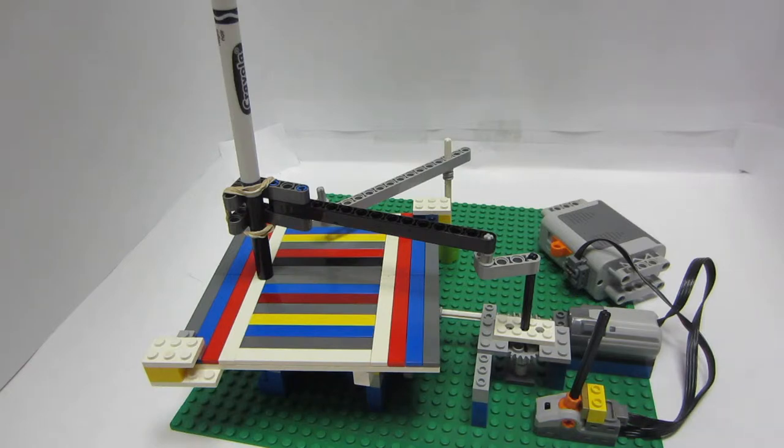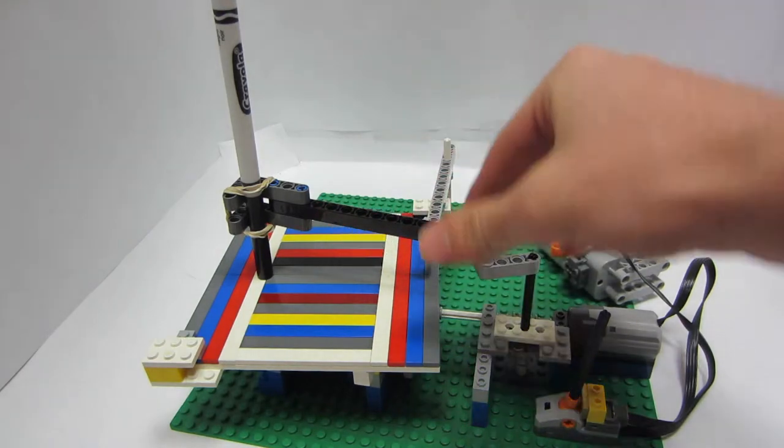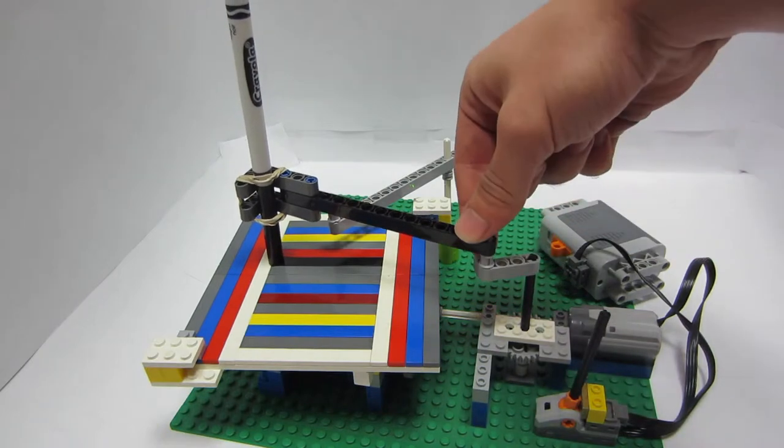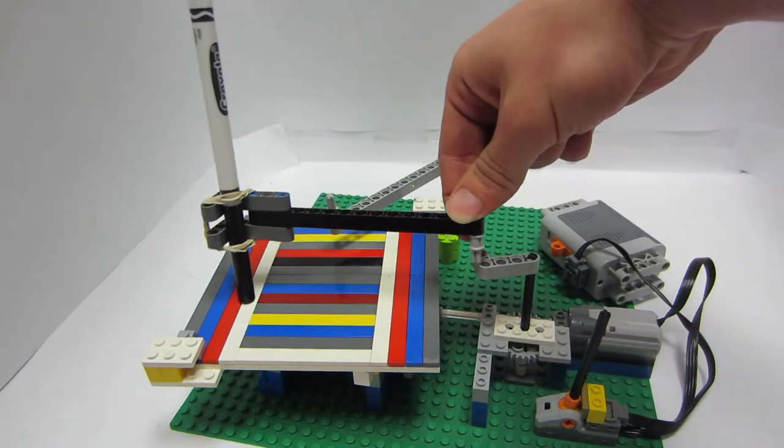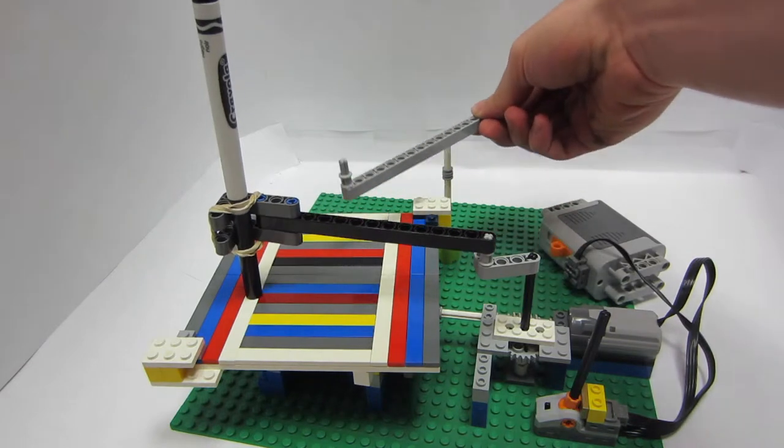This is my LEGO Spirograph. The Spirograph has three settings. You can adjust where this attaches to the main arm. It has a peg here for adjusting the radius of the circle, and you can move how long this arm is back here.